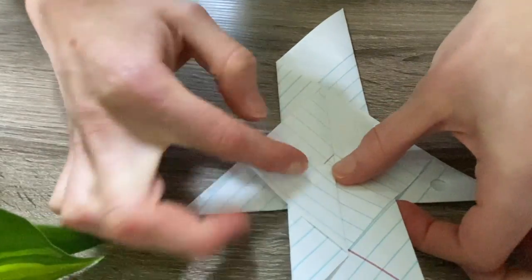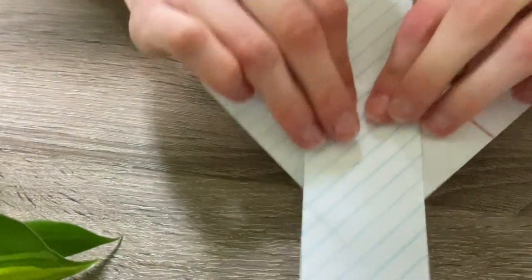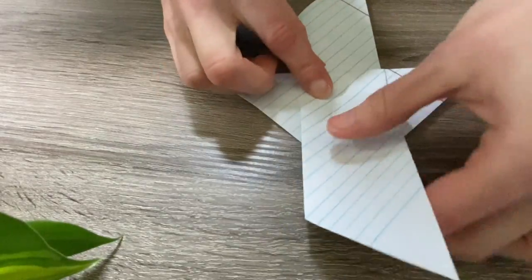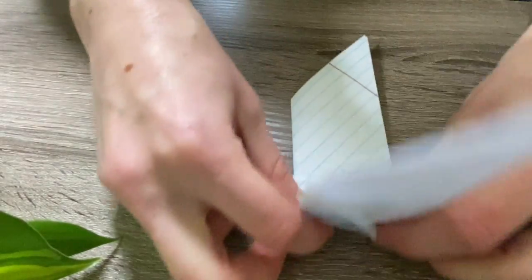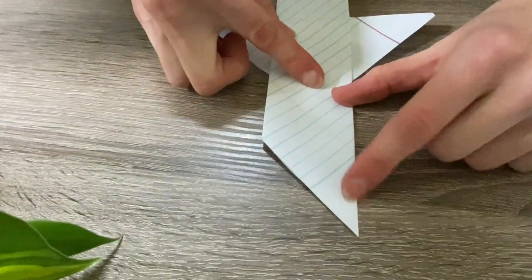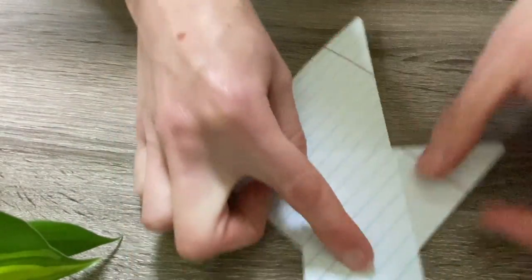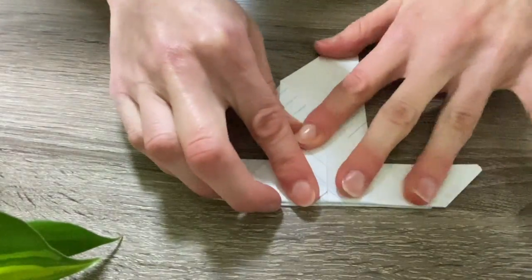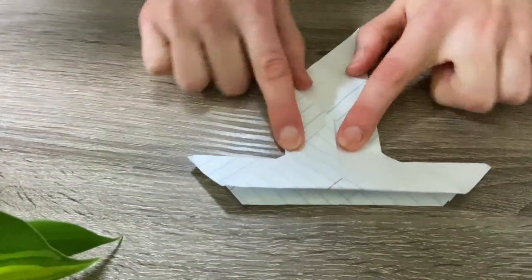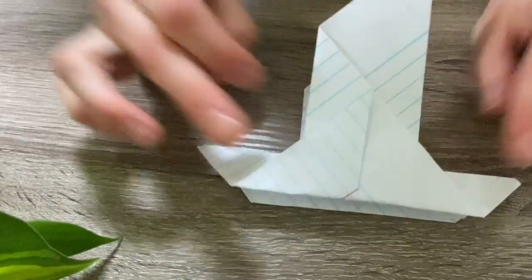Then we're going to flip the whole thing over, and then we're going to take the part that we didn't fold before and fold this wing tip to this wing tip. So it should look like that and that's almost our complete bird.